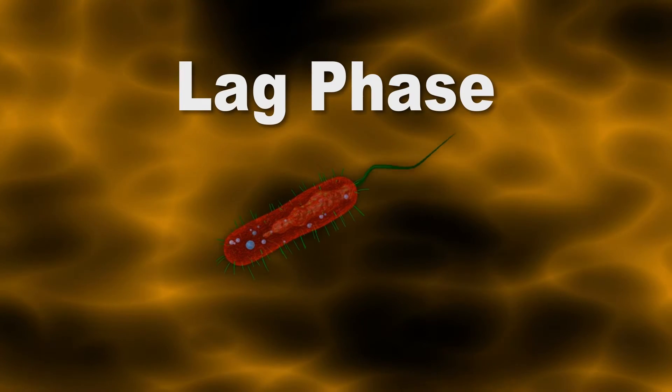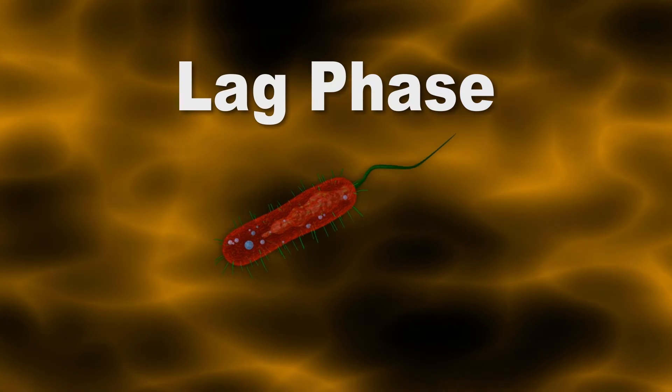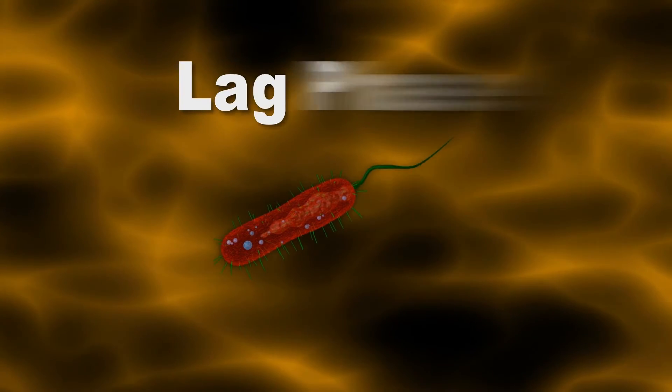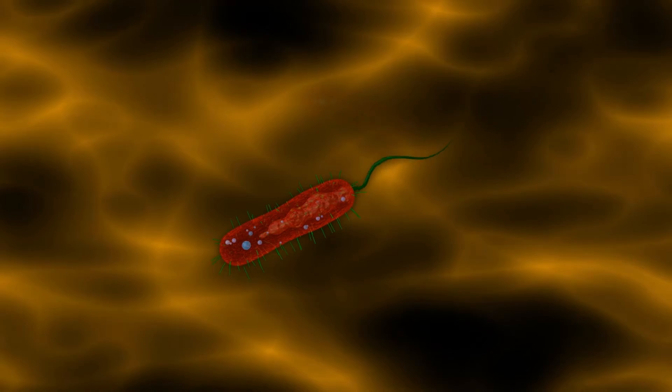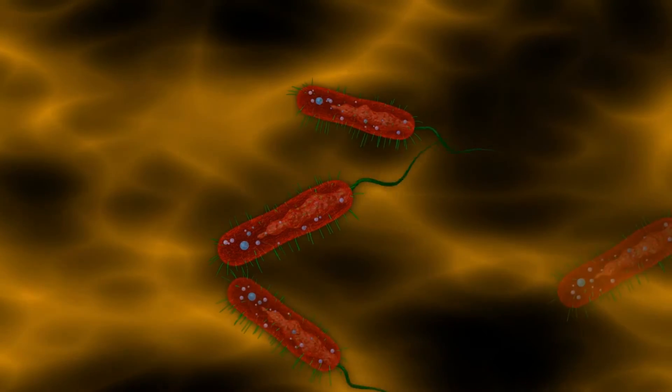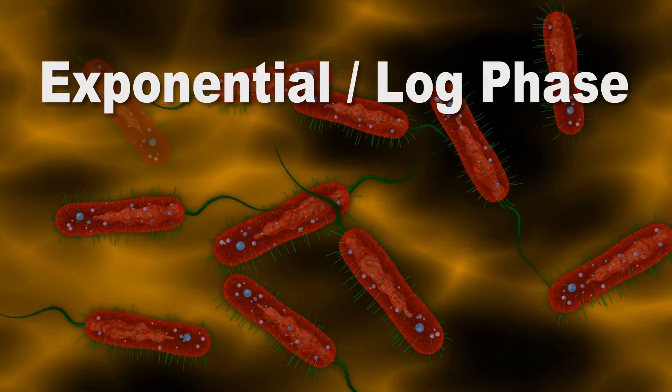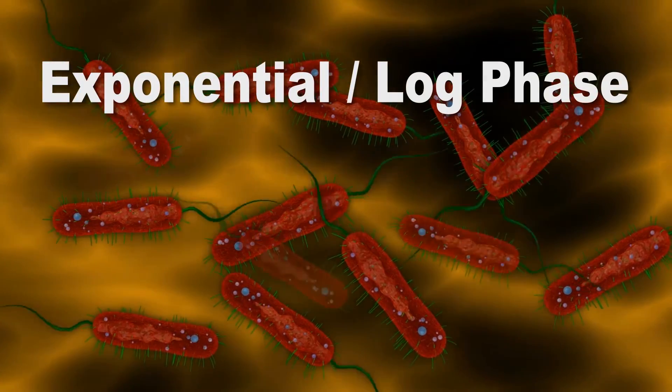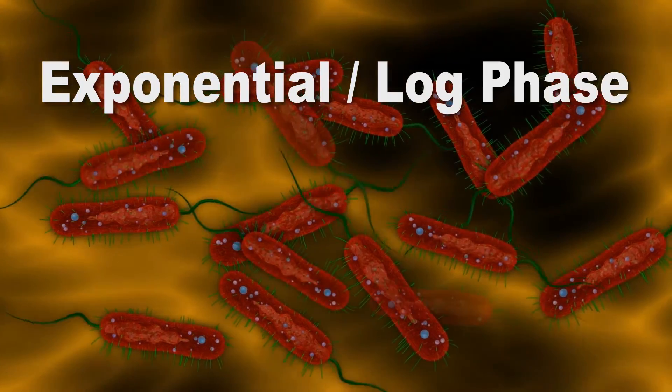After the organism adapts, the batch takes off. The cells begin dividing at a constant rate — an exponential or logarithmic increase.